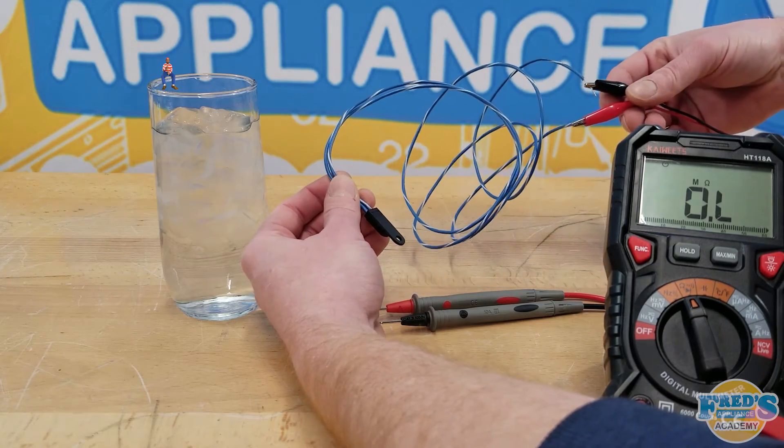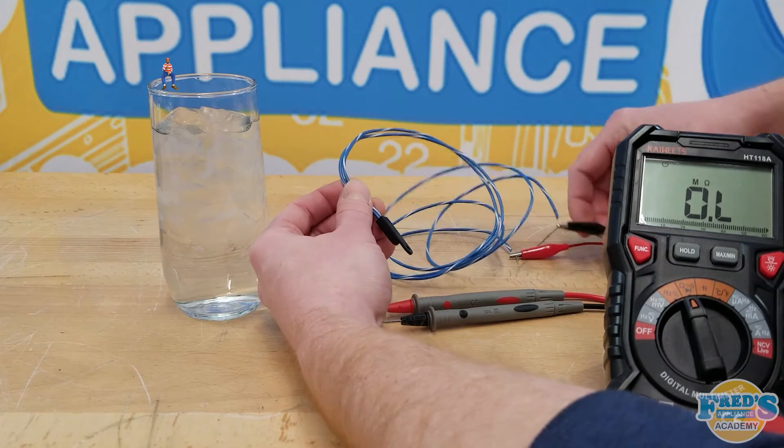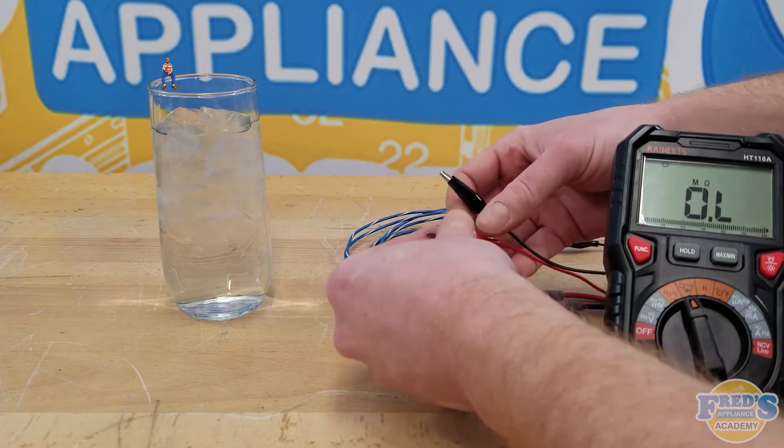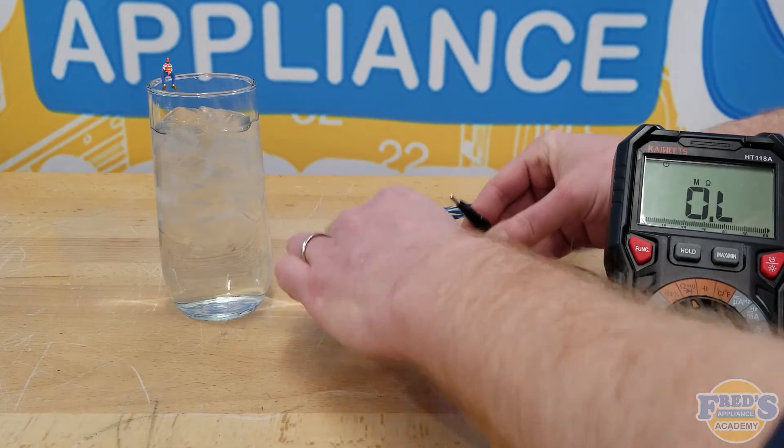To begin I have clamped on two alligator leads, one going to each wire on the thermistor. Next we'll attach the other end of our alligator clips to our meter leads.